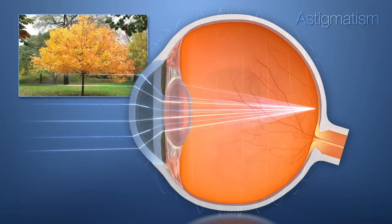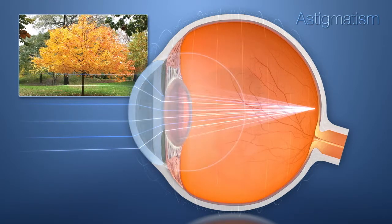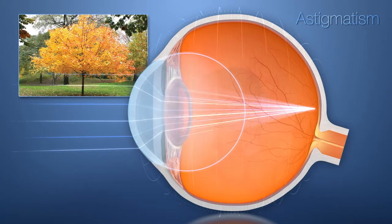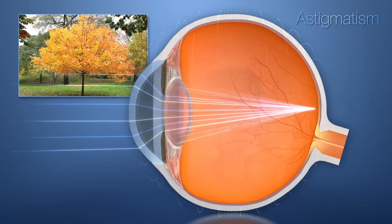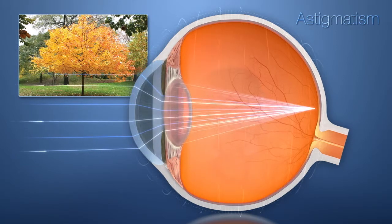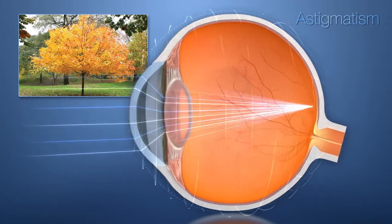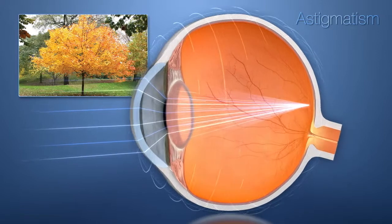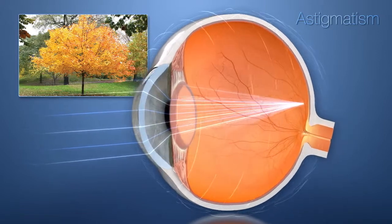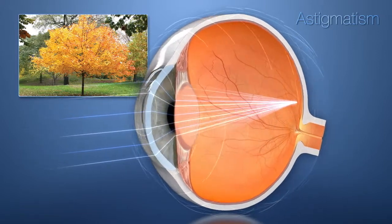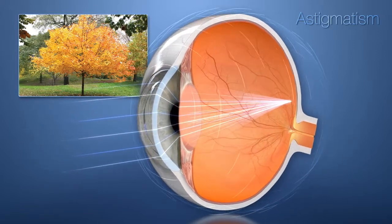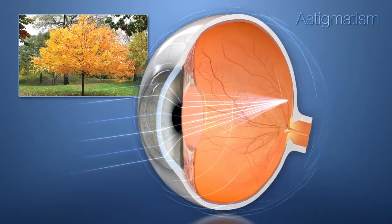With a healthy normal eye, the shape of the cornea is spherical, like a ball. This allows light to pass through the lens without distortion. Light rays focus properly on your retina to provide a sharp image of what you're seeing.